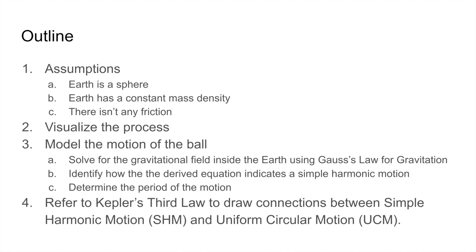Then we will model the motion of the ball. So first we will solve for gravitational field inside the earth using Gauss's law for gravitation. Then we will identify how the derived equation indicates a simple harmonic motion. And then from that point, we will determine the period of the motion. Afterwards, we will refer to Kepler's third law to draw connections between simple harmonic motion and uniform circular motion.